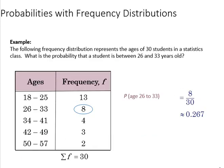We can also calculate probabilities for frequency distributions, such as in this example where we've got students ages listed here in the frequency table. We could ask what is the probability of a student being between the ages of 26 and 33. You see that there are eight students who fall within that class.